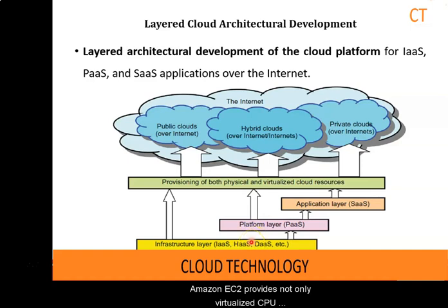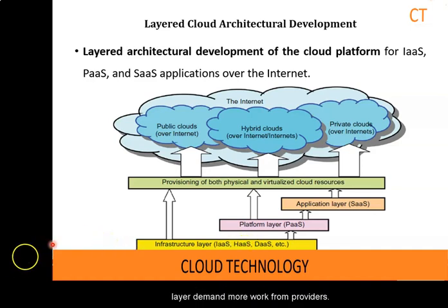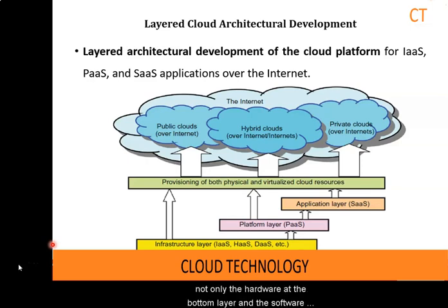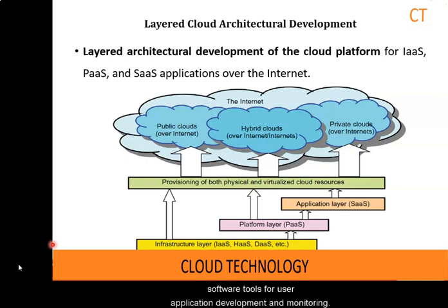For example, Amazon EC2 provides not only virtualized CPU resources to users, but also management of these pervasive resources. Services at the application layer demand more work from providers. The best example of this is Salesforce.com CRM service, in which the provider supplies not only the hardware at the bottom layer and the software at the top layer, but also the platform and software tools for user application development and monitoring.